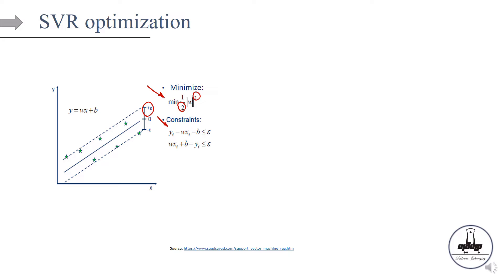For observations above the line, let's say this is our y_i, and the model predicts y-hat of i, where y-hat of i equals wx plus b. We're going to say that all observations above the line should be within the margin — so y minus y-hat should be less than epsilon. That's the constraint for observations above the hyperplane.